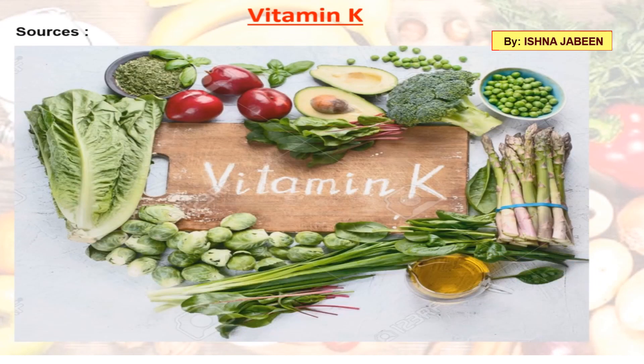Vitamin K helps in the clotting of blood. It is found in green leafy vegetables, cabbage, cauliflower, and broccoli.